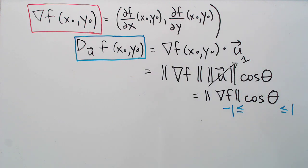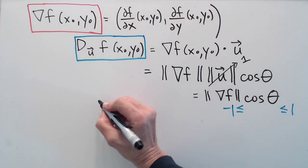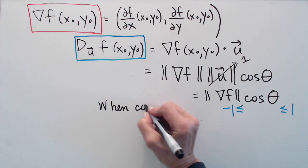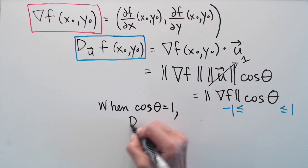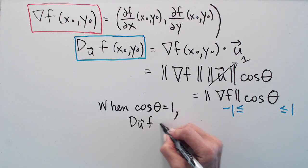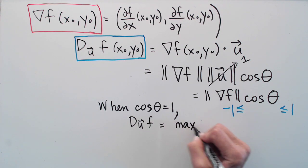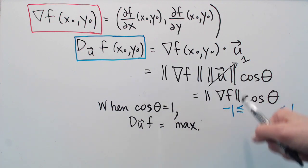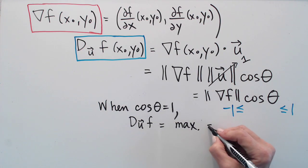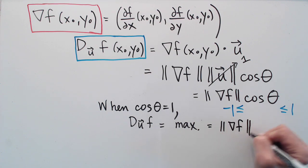And that tells us something fairly interesting about the directional derivative. It tells us what is the largest value the directional derivative can have and what is the smallest value the directional derivative can have. So let's take a look at that. When cos theta is 1, the directional derivative is a max. Because 1 is the largest value that this can have and what is that value? It's just the value of the length of the gradient.